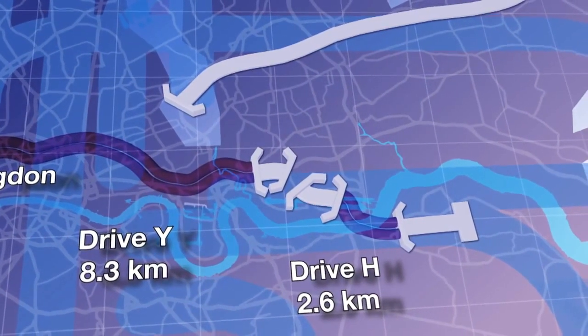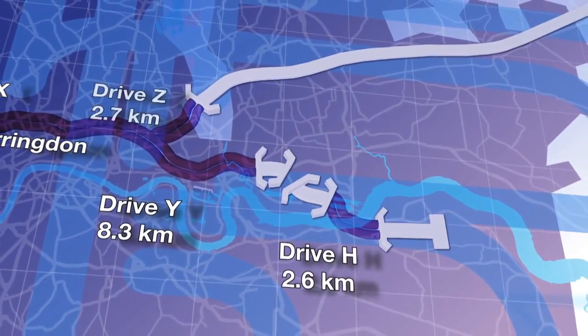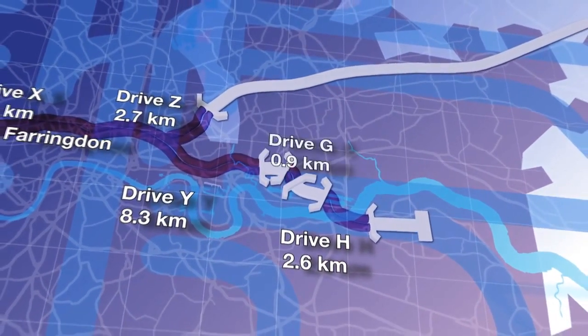A further two TBMs, Mary and Sophia, will construct the tunnels for Drive H, running underneath the Thames from Plumstead to North Woolwich, followed by Drive Z and Drive G.